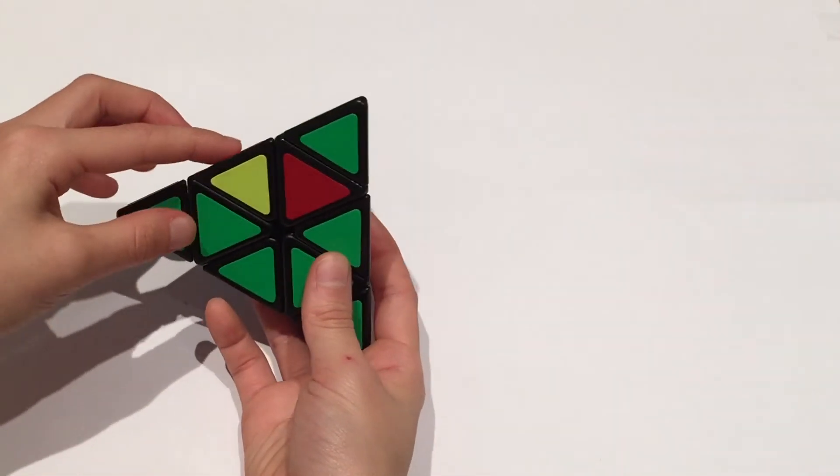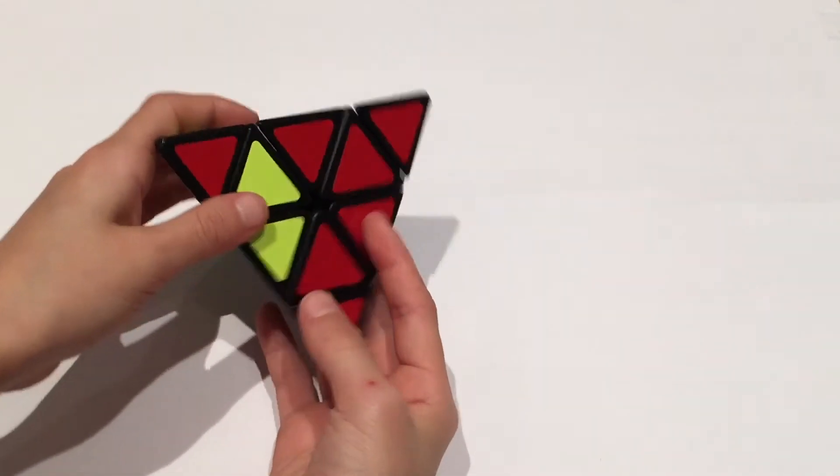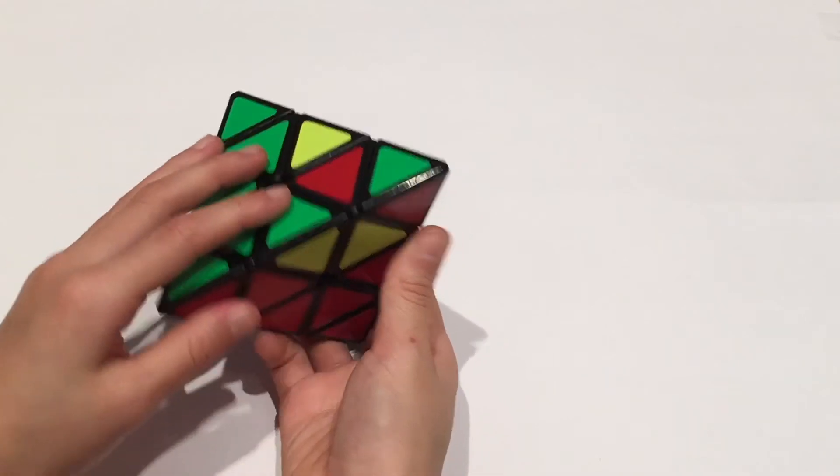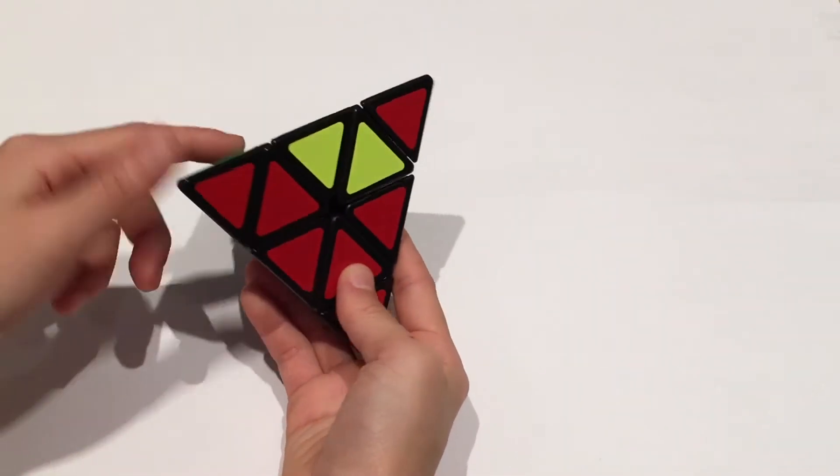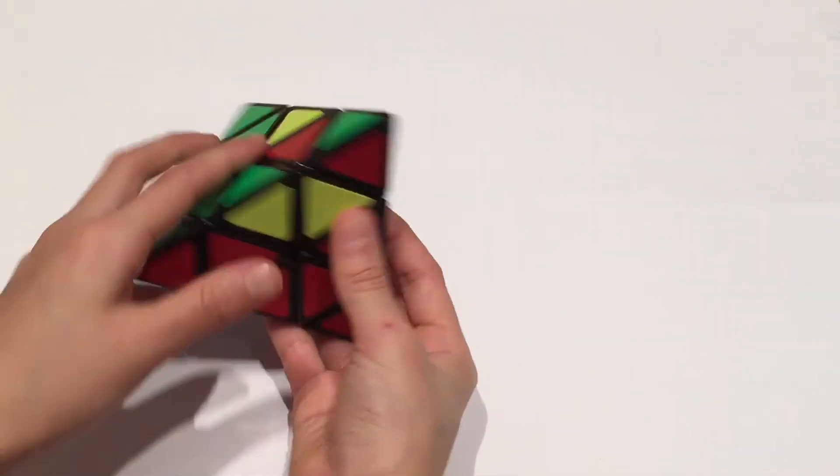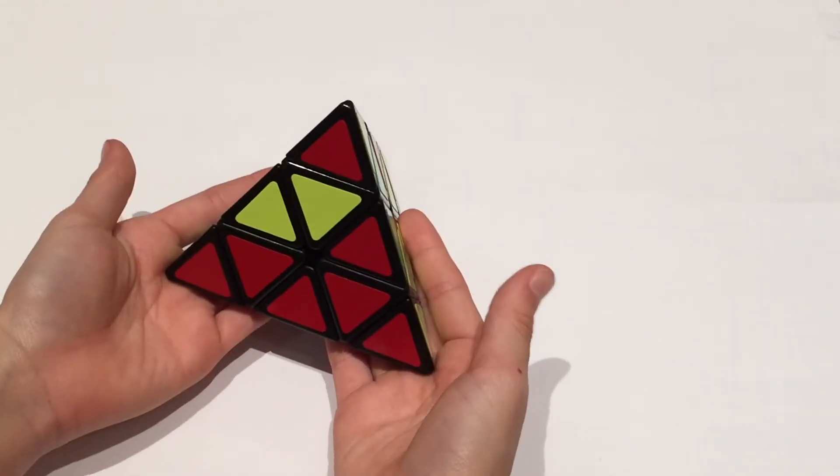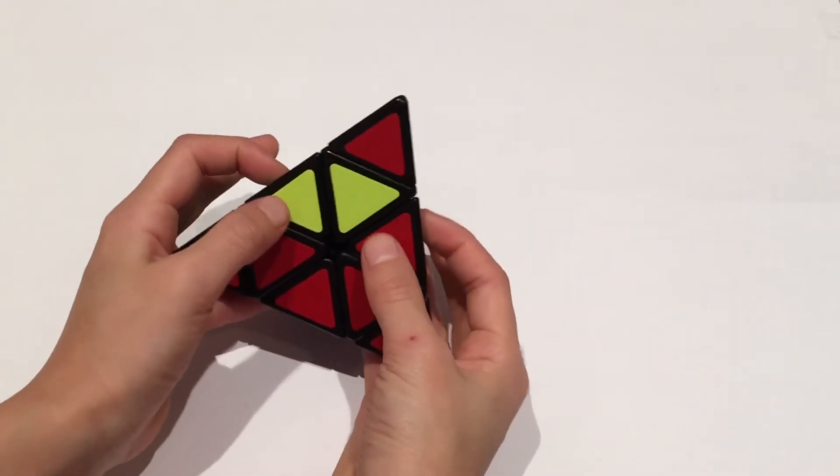And then you want to find two edges that have two of the correct sides on it. So here this is the perfect example. Green right here. Yellow is incorrect here but that's okay because we only need one of the correct color. And then here we have red on this side. So you want to hold it like this so that both edges are on these two sides.